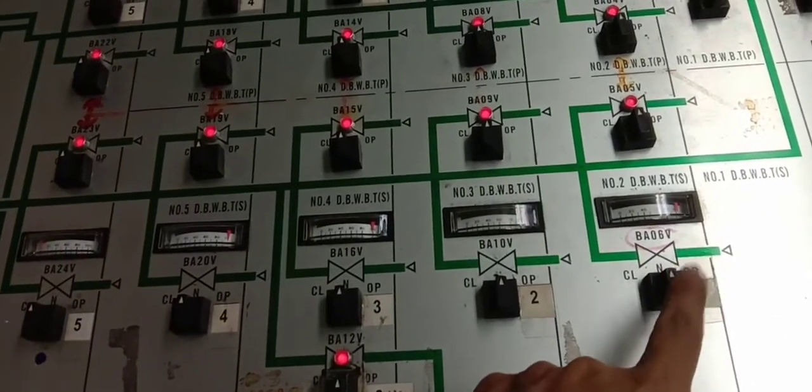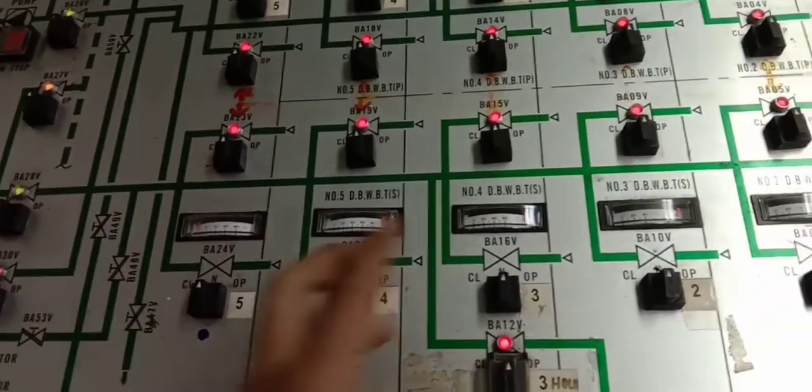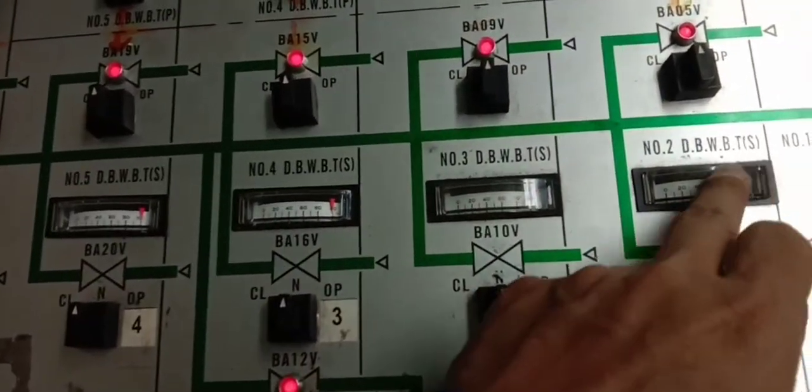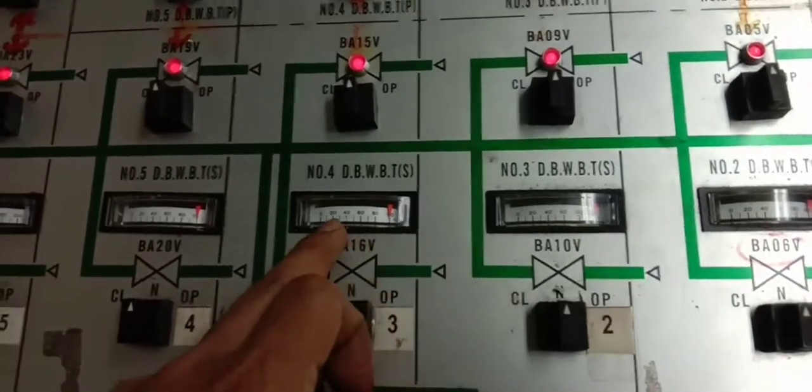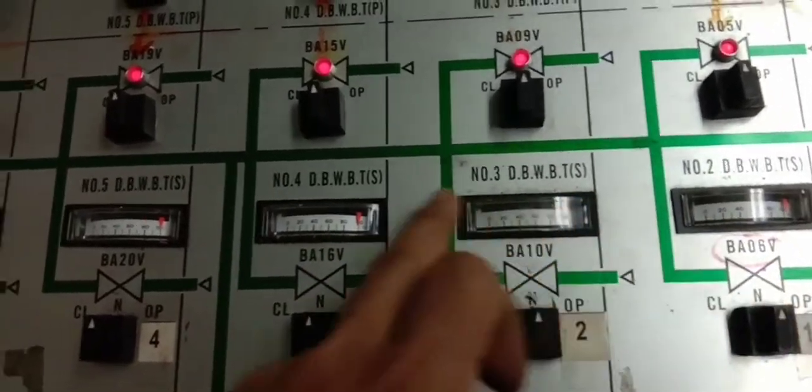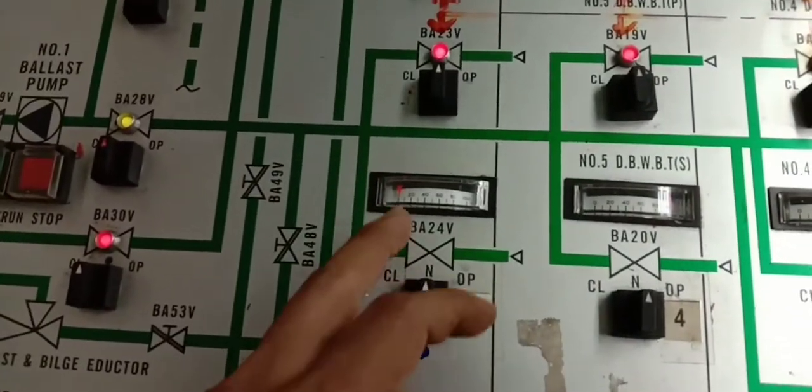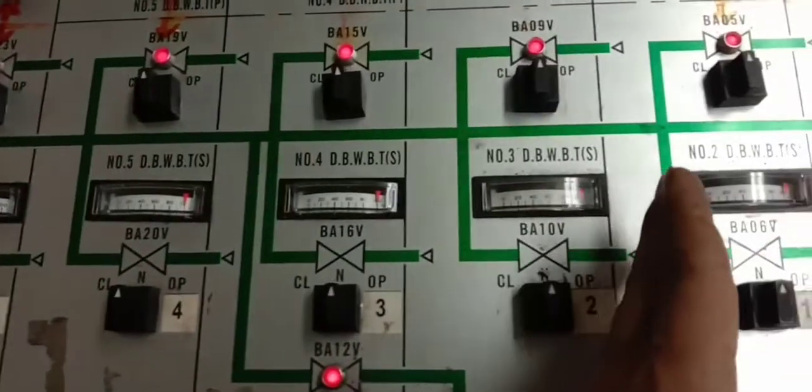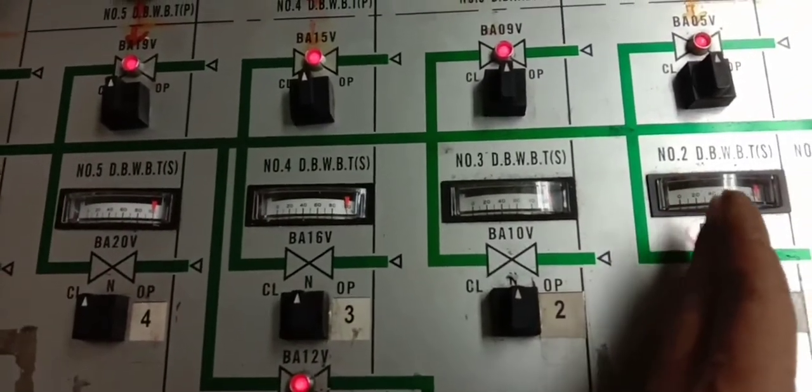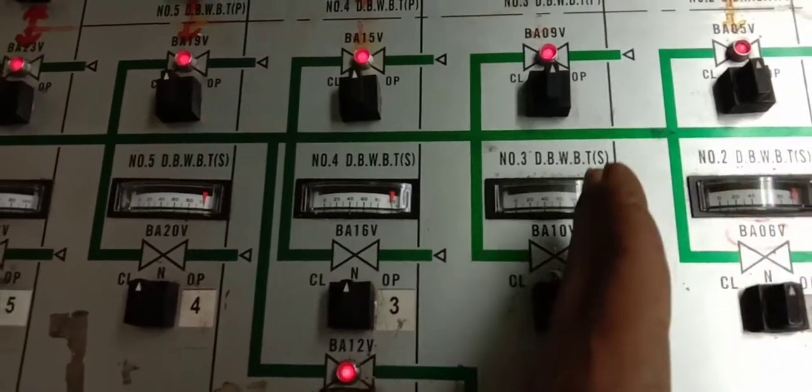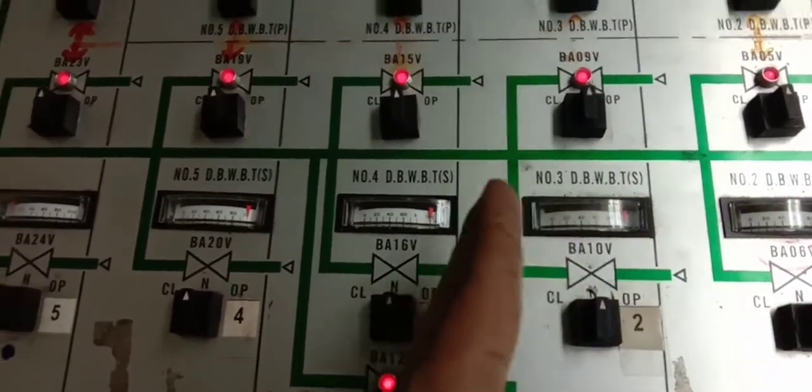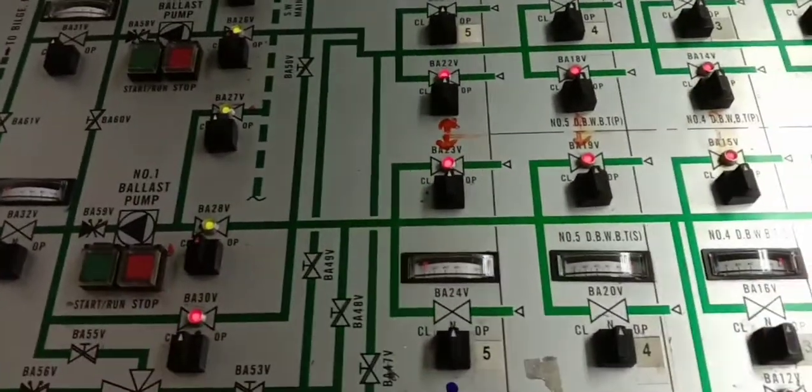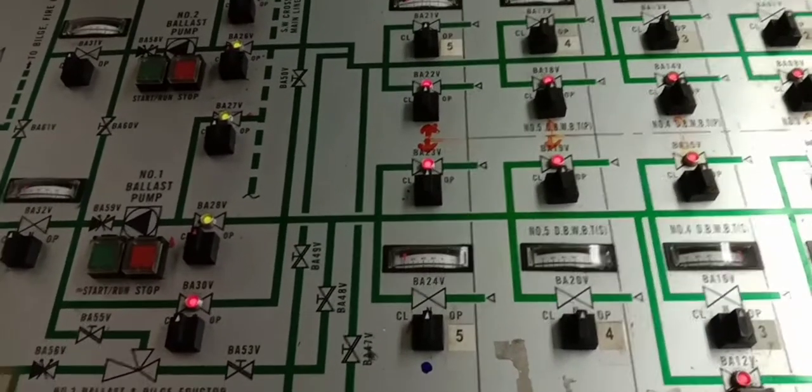Open these tanks - DBT one, two, three, four, five. These gauges here show the percentage of valve opening, so you can see the status. When it shows 100, it's fully open. You can adjust to 60, half, 20, just like that. Very easy, fellow mates. Gravity-in ballast operations.